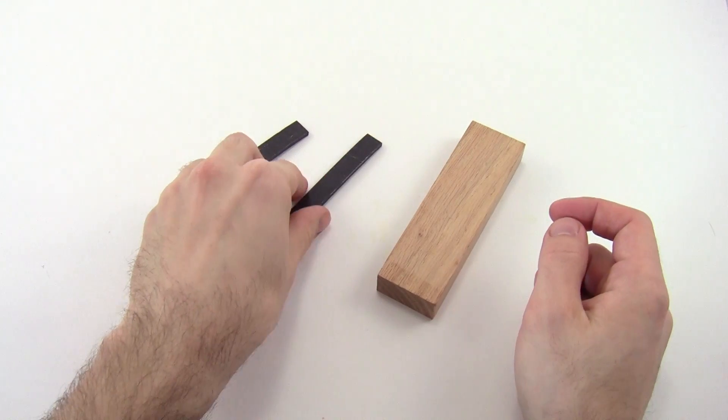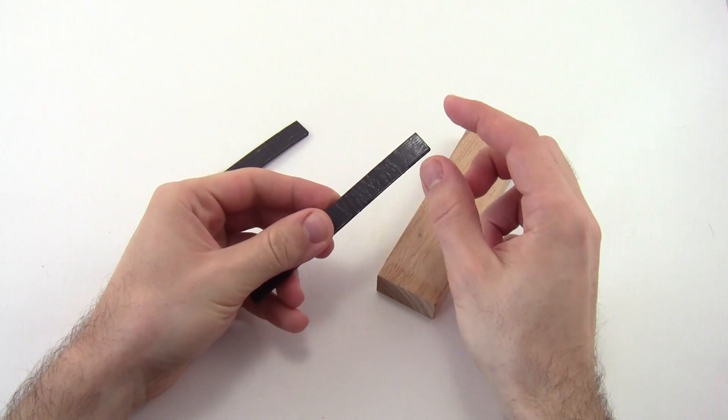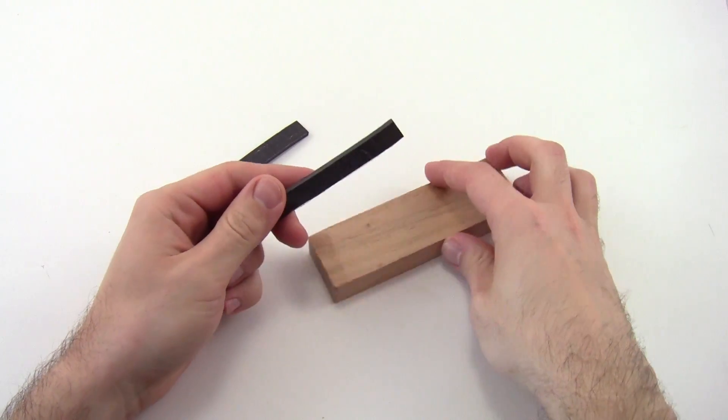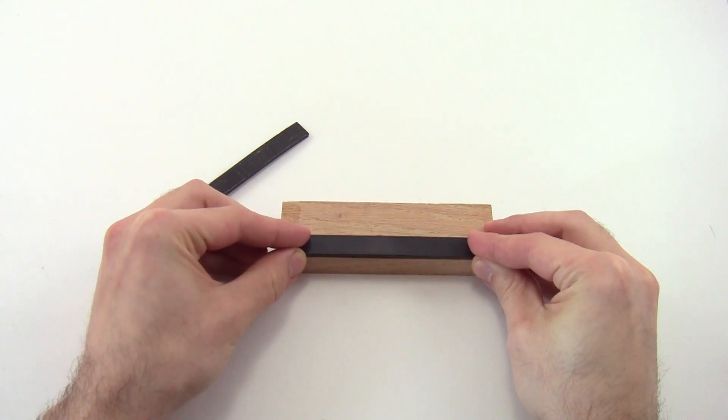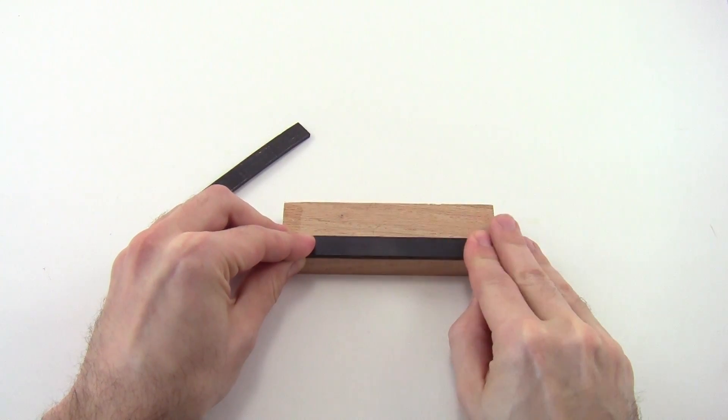To start, take your wooden block and two short magnetic strips. Peel the paper backing off the magnetic strips and then put them on the edge of one side of the block. Press down firmly and they should stick to the wood.